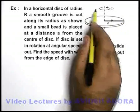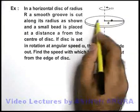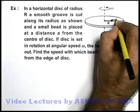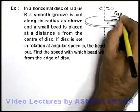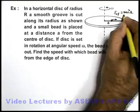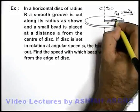It is quite obvious when we rotate the disc, along with the disc in the groove the bead will also be rotating, and it will be experiencing an outward centrifugal force that will be equal to m omega square r, if it is located at a distance r from the centre of the disc.